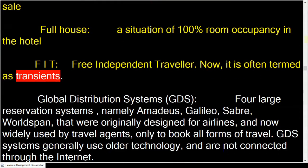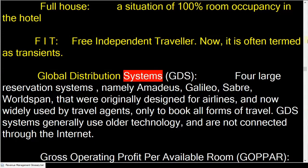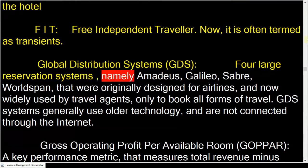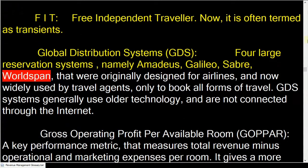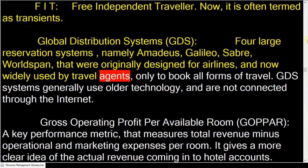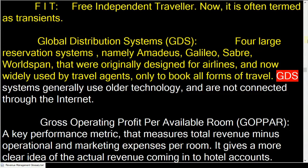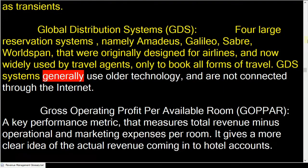Global distribution systems: large reservation systems, namely Amadeus, Galileo, Sabre, and WorldSpan, that were originally designed for airlines and now widely used by travel agents to book all forms of travel. GDS systems generally use older technology and are not connected through the internet.